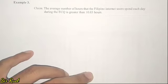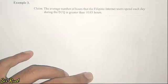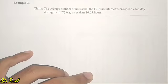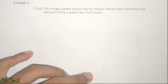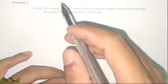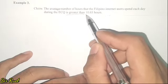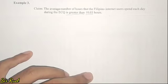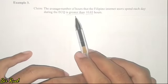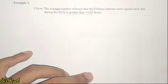Example 3: The hypothesis or claim is that the average number of hours that Filipino internet users spend each day during the ECQ is greater than 10.03 hours. Looking at the sentence, the parameter is average, and the word used is 'greater than' with a value of 10.03. Since the word 'greater than' was used instead of 'equal' or 'is,' this hypothesis is an alternative hypothesis.